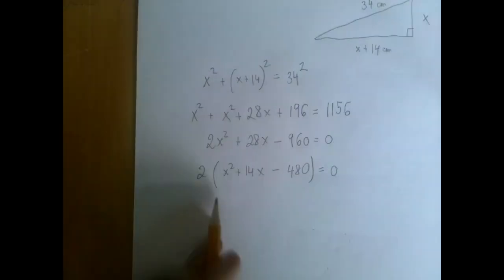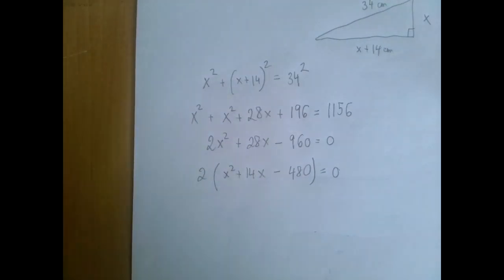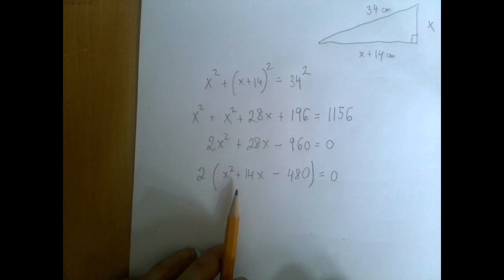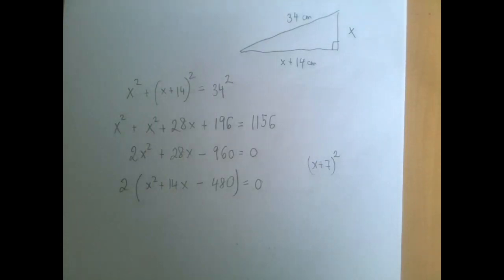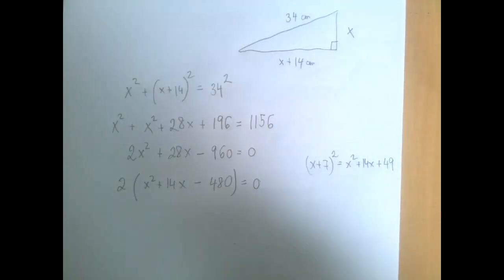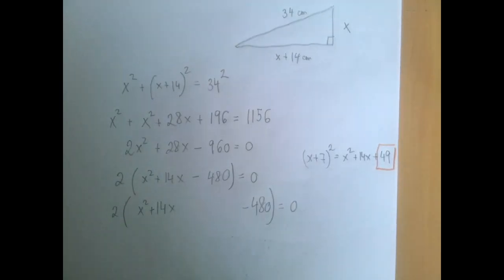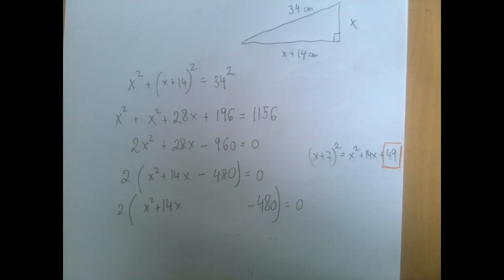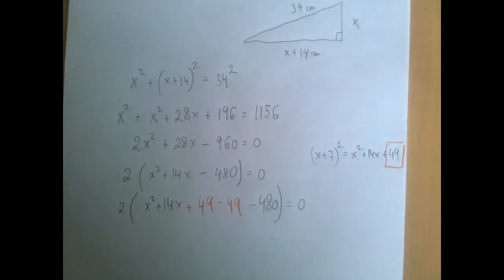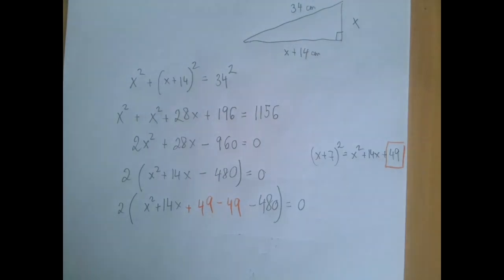Inside the parentheses, we proceed to complete the square. Half of the linear coefficient is 7, so our complete square is going to be (x plus 7) squared, which when expanded gives us x squared plus 14x plus 49. So we smuggle in the 49 — we leave a little gap for the smuggling step — by adding 49 and subtracting 49 immediately, so we added zero to this expression.